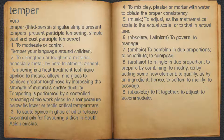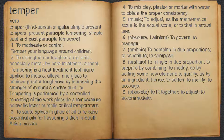12. To strengthen or toughen a material, especially metal, by heat treatment; anneal. For example, tempering is a heat treatment technique applied to metals, alloys, and glass to achieve greater toughness by increasing the strength of materials and/or ductility.